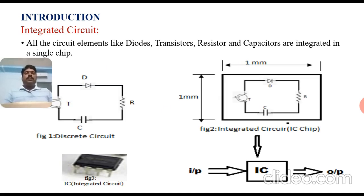Integrated circuit. Here, all the circuit elements like diodes, transistors, resistors and capacitors are integrated in a single chip. Let us see figure number 2. It is an integrated circuit. The dimension of that IC chip is 1 mm, so it occupies a very small amount of area.